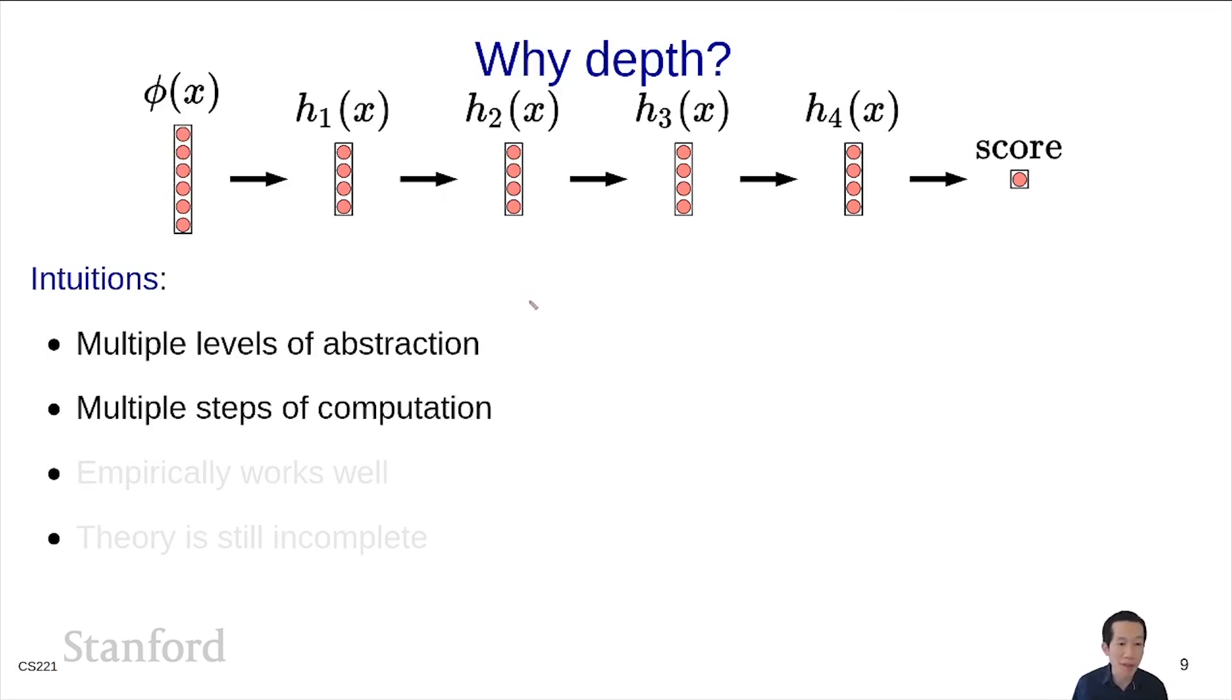Another piece of intuition is that empirically it works really well, which is not to be understated. For a more theoretical reason, the jury is still kind of out on this. You can have intuitions about how deeper logical circuits can capture more than shallower ones, but the relationship between circuits and neural networks requires massaging. This is still an active area of research.